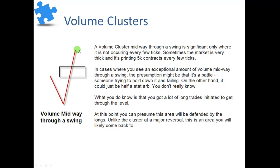Volume clusters must be exceptional volume — exceptional relative to what's printing that day. If you see 10,000 contracts go off at a price and all the levels that day have traded 9,000 contracts, it's not significant. A cluster midway through a swing is usually accompanied by a pause, because if an exceptional amount of volume is printing, it takes time to happen. When you see the market move up, then exceptional volume print, and then carry on up, you don't actually know why — it could be a failed attempt by bears to hold the market down, or one half of a large stat-arb position being executed.